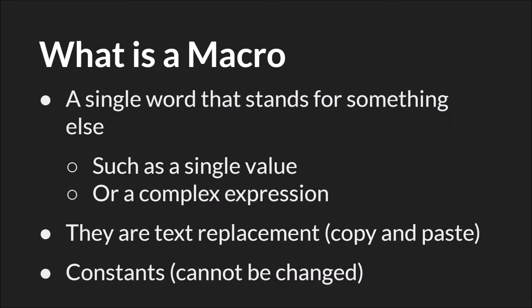A macro is a single word that stands for something else, such as a single value or a complex expression. Essentially, they are a text replacement, or copy and paste. You tell GameMaker what you want this word to stand for, you then use that word throughout your code, and when the game is compiled, GameMaker goes through and replaces that word with what you wanted it to stand for.